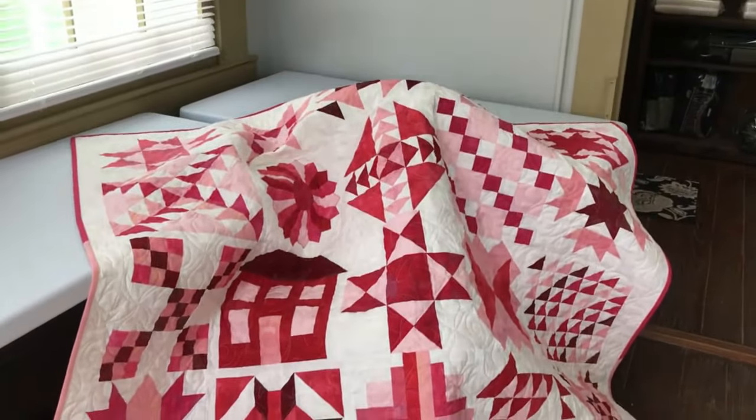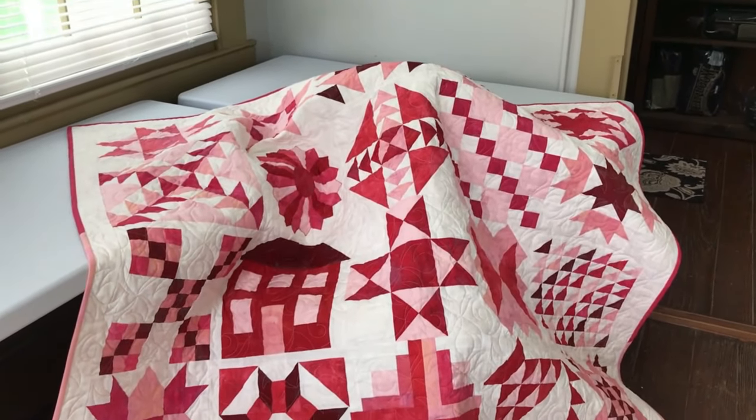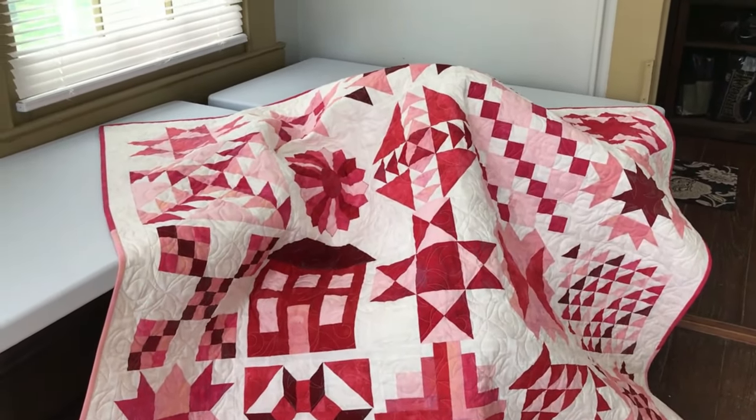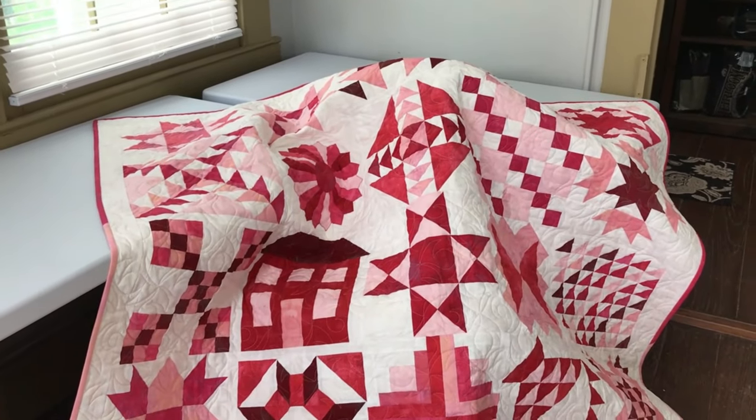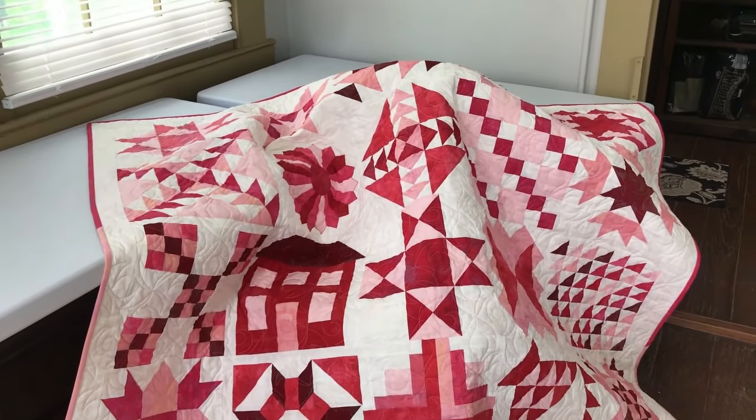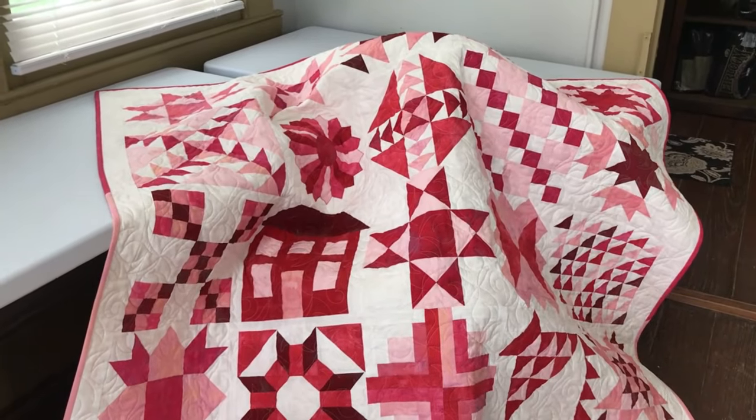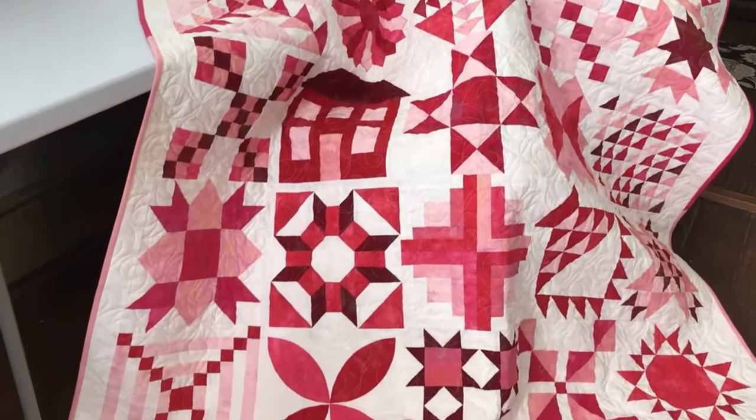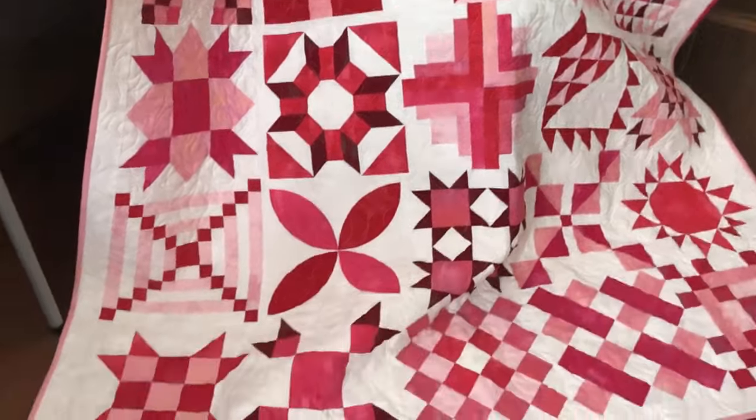It was really fun to do this quilt. It was easy to put together, and I found that just doing one block at a time helped me out. So cut out a block, then piece the block. Don't try to do any speed piecing or anything. You can see the binding is done in two different fabrics and this quilt has been quilted.